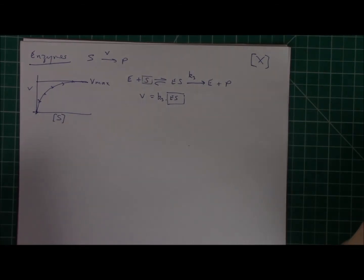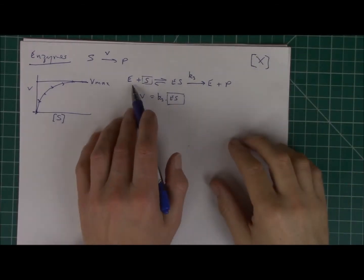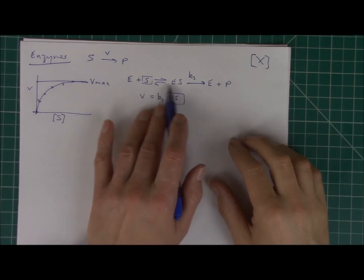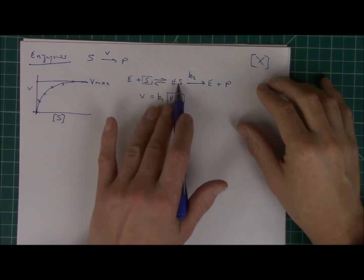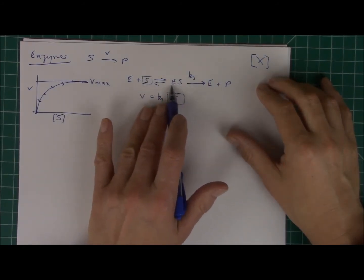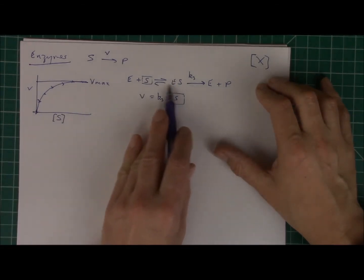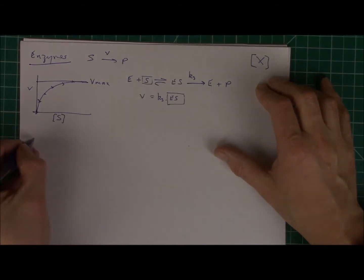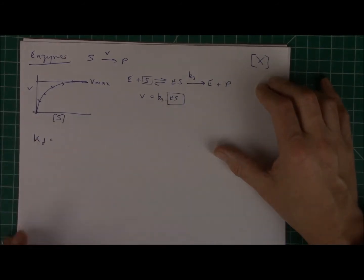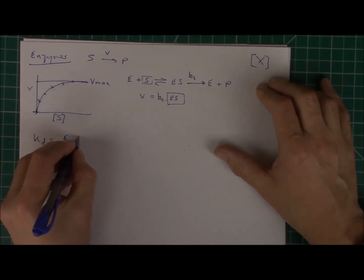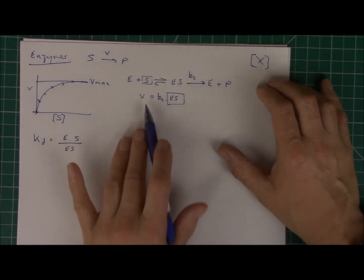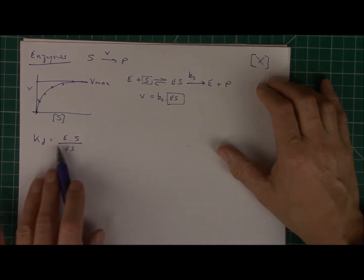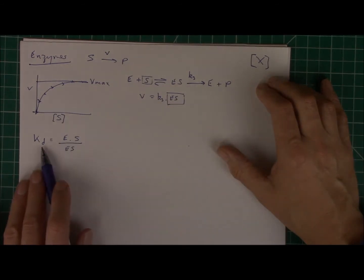So one of the simplest assumptions you can make is that when E binds to S to form ES, and ES breaks down, of course, to form E plus S, that this reaction is so rapid that it's pretty much always in equilibrium. So this is in equilibrium. And so there's an equilibrium constant associated with this reaction, which we'll call KD, or the dissociation constant. And that's related to the concentration of E times the concentration of S divided by the concentration of ES. So I'm going to assume that for this purpose that throughout the time of the reaction, this ratio always equals KD.